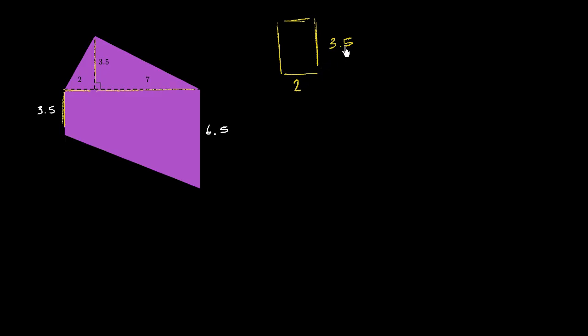If I had a rectangle that was 2 times 3.5, or 2 units wide and 3.5 units high, we know that it would have an area of 2 times 3.5. Now a triangle, especially a right triangle like this, is just going to be half of a rectangle like this. So this area is going to be 1 half times 2 times 3.5. And 1 half times 2 is equal to 1, times 3.5 is 3.5 square units.